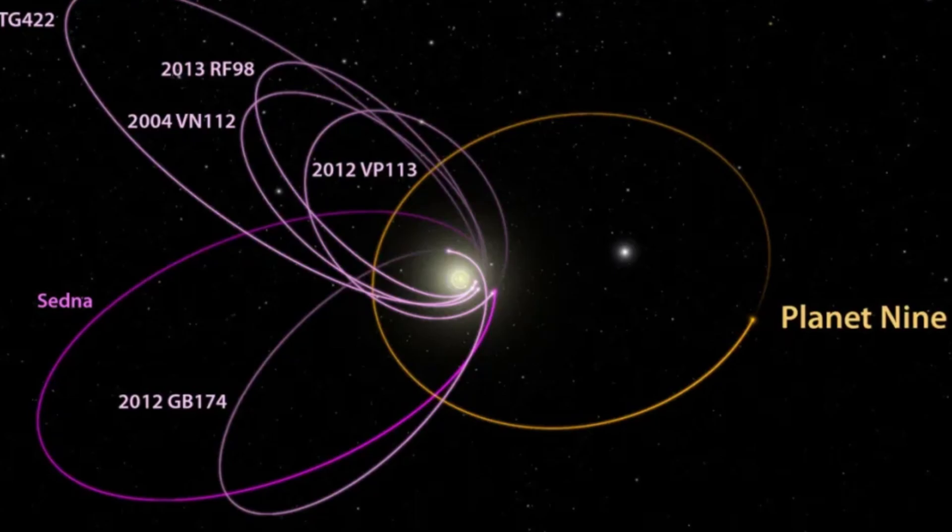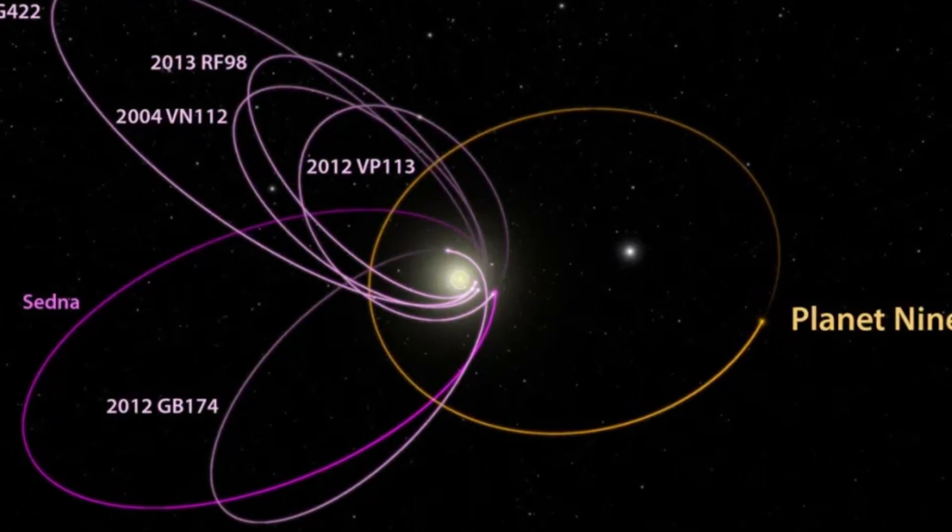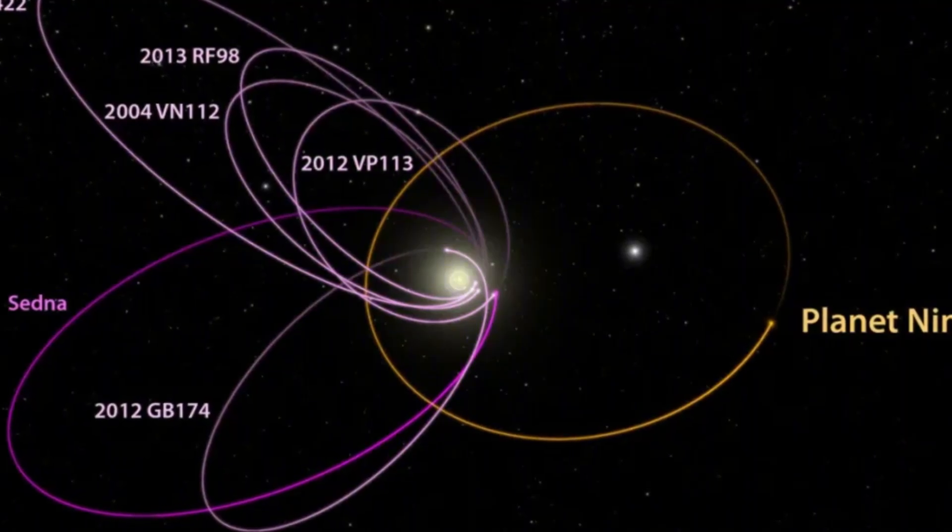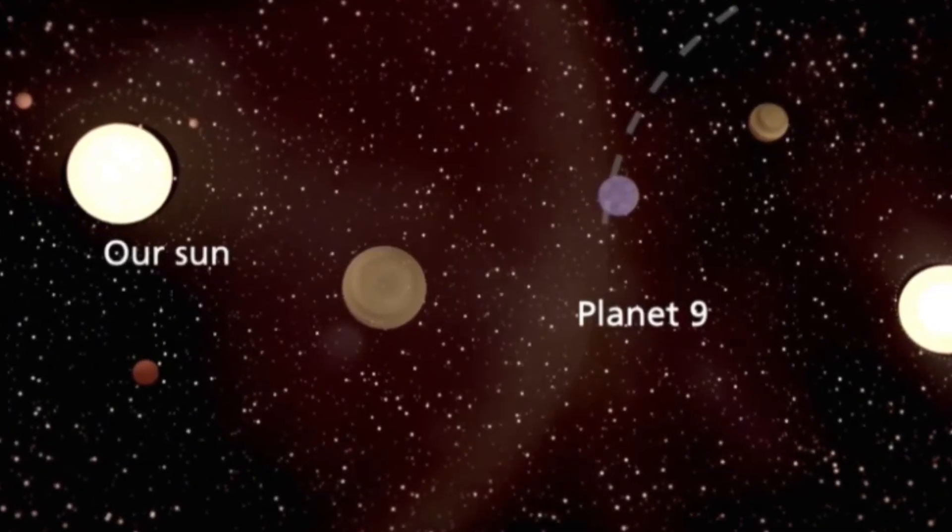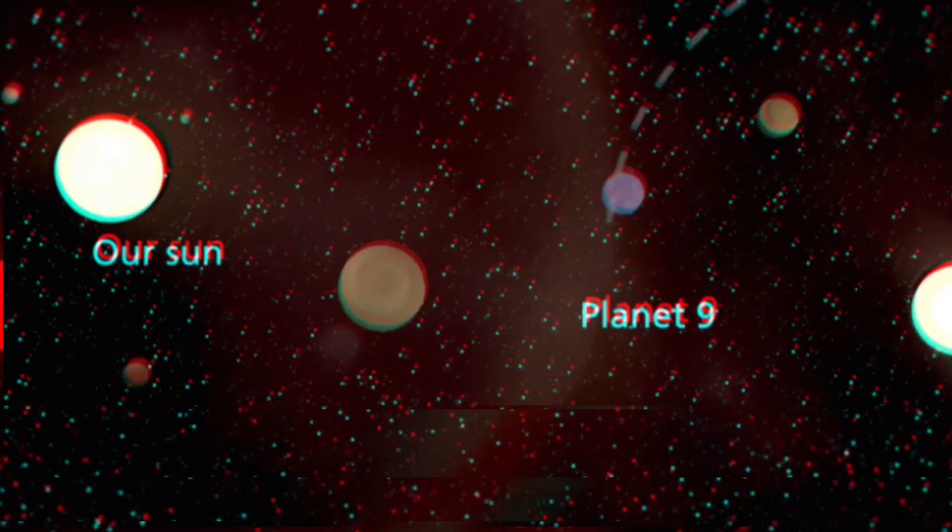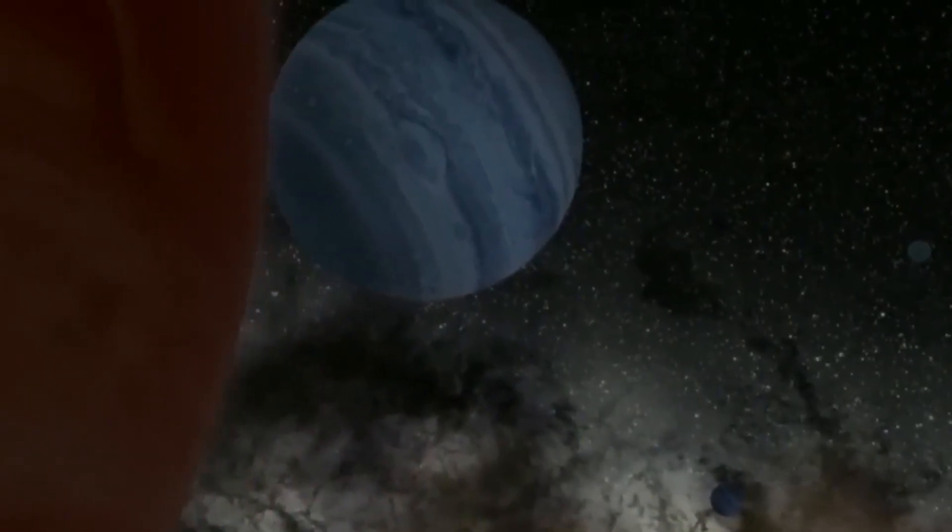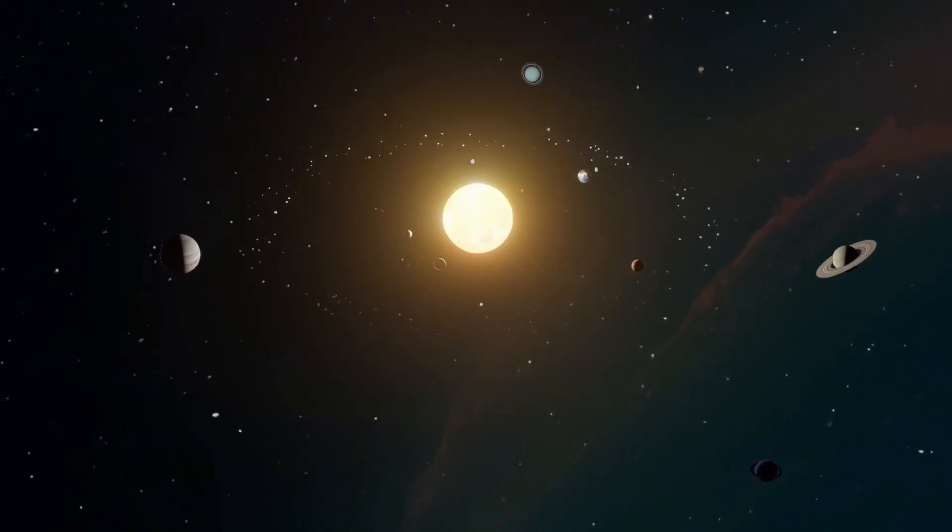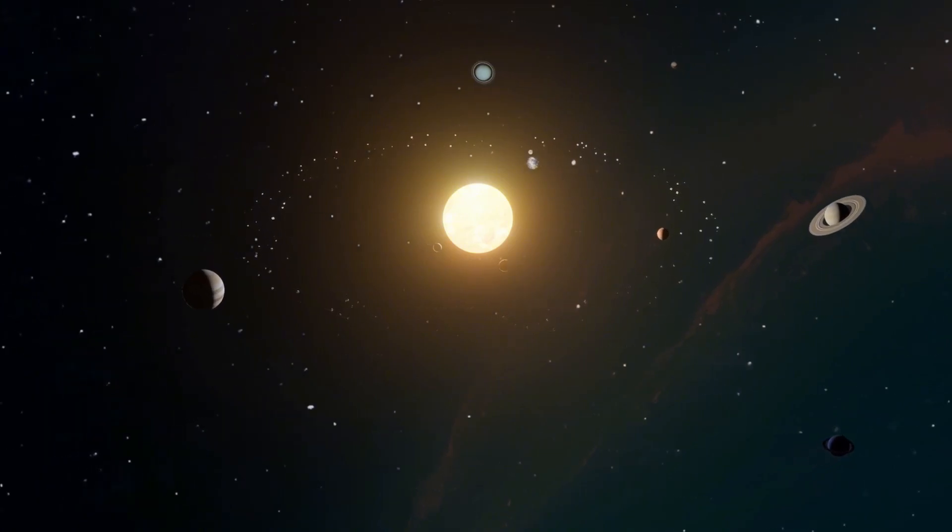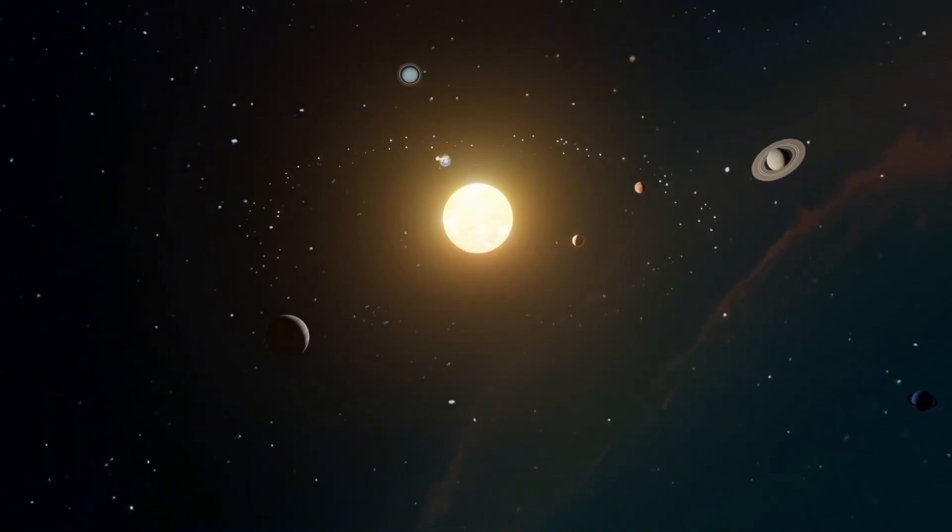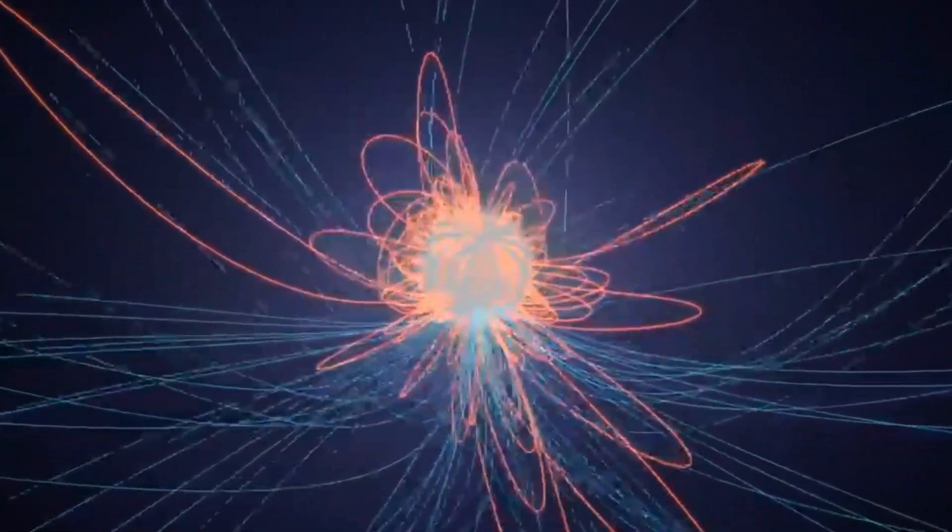If this sounds familiar, it's because astronomers think something similar might have happened in our own solar system. There's growing evidence for a possible Planet 9 lurking in the outer reaches of our solar system, influencing the orbits of distant objects beyond Neptune. Either way, HD-106906 b gives us a glimpse of what Planet 9 might look like if it exists. It's like we have a time machine, showing us what our solar system might have been like billions of years ago when things were more chaotic and planets were still settling into their final orbits.